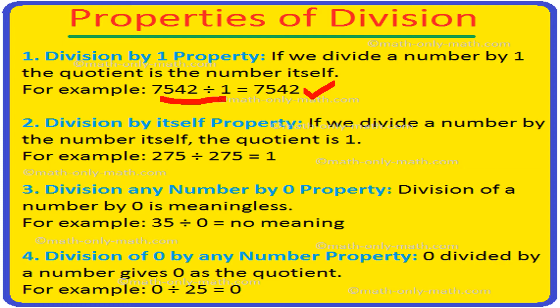Second is the division by itself property. If we divide a number by itself, the quotient is 1. For example, 275 divided by 275 — the quotient is 1 and the remainder is 0. Third is division of any number by 0: it is meaningless and not defined.